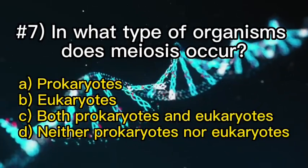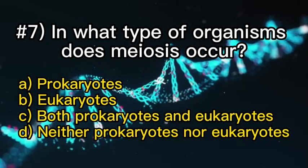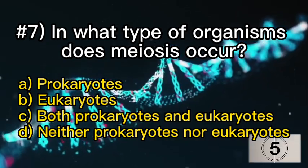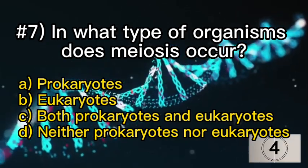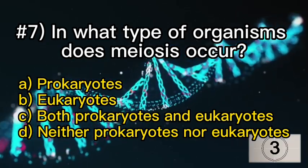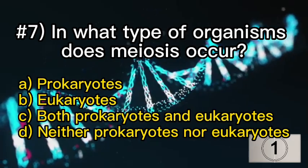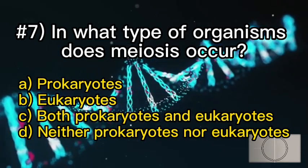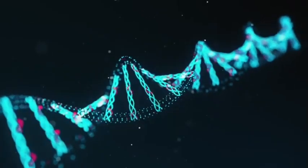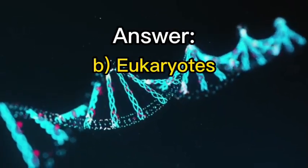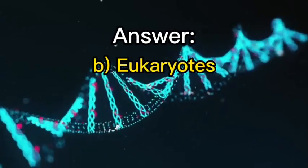In what type of organisms does meiosis occur? B — eukaryotes.